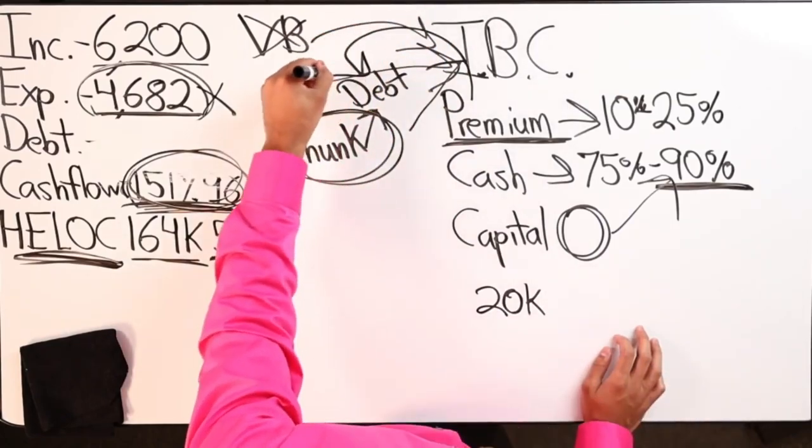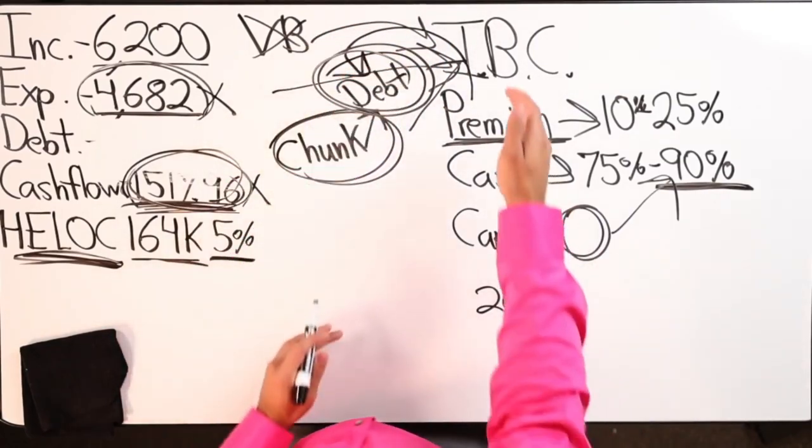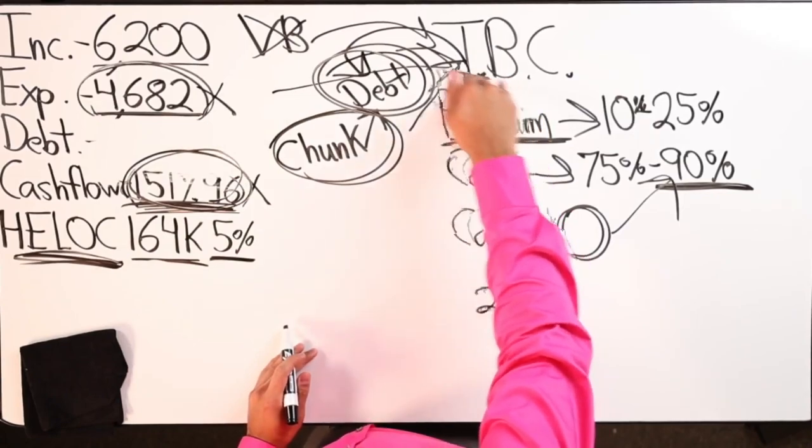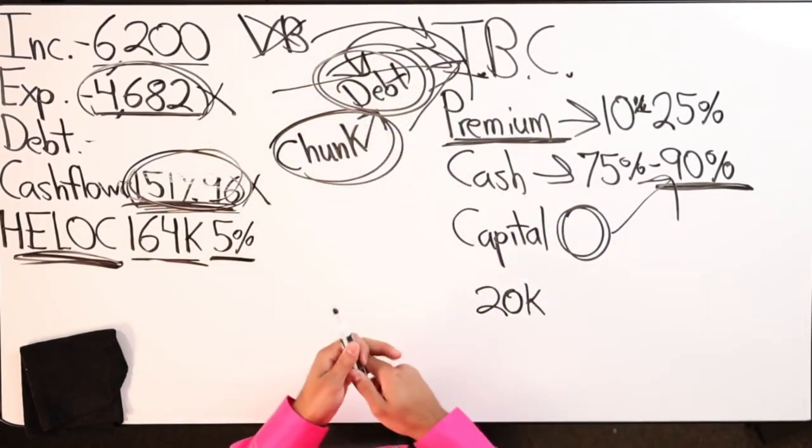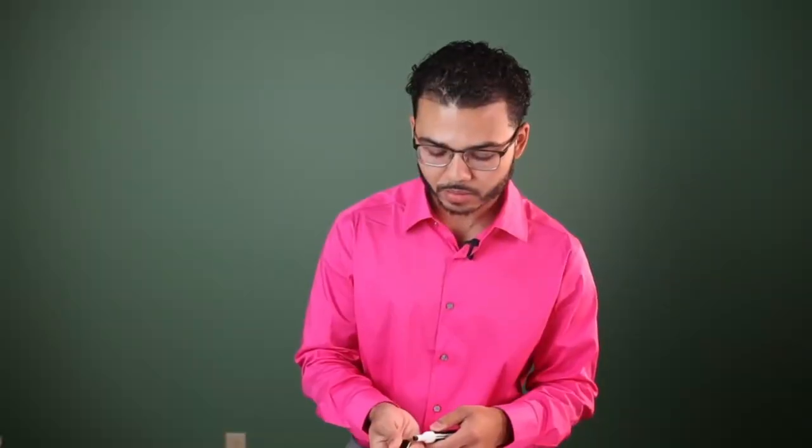What I like to do is send the money to you first, then I borrow against it to pay off debt. IBC ends up being better than velocity banking in a lot of cases that I work with, because you're creating your own line of credit here that doesn't require a credit check. You don't have to worry about utilization or anything like that.